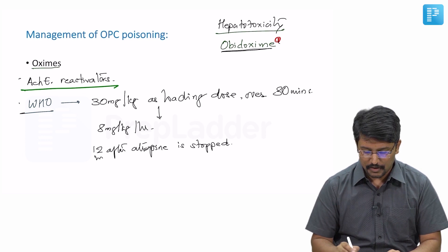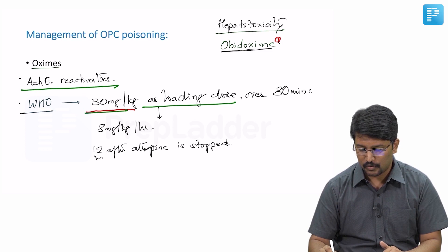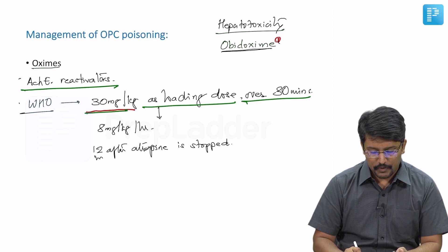Nonetheless, World Health Organization continues to recommend use of oximes for all cases of organophosphate poisoning. So what is the recommended dose as per WHO? 30 milligrams per kg as a loading dose which is infused over 30 minutes to 1 hour. And after initial infusion, we would be giving 8 milligrams per kg per hour infusion.